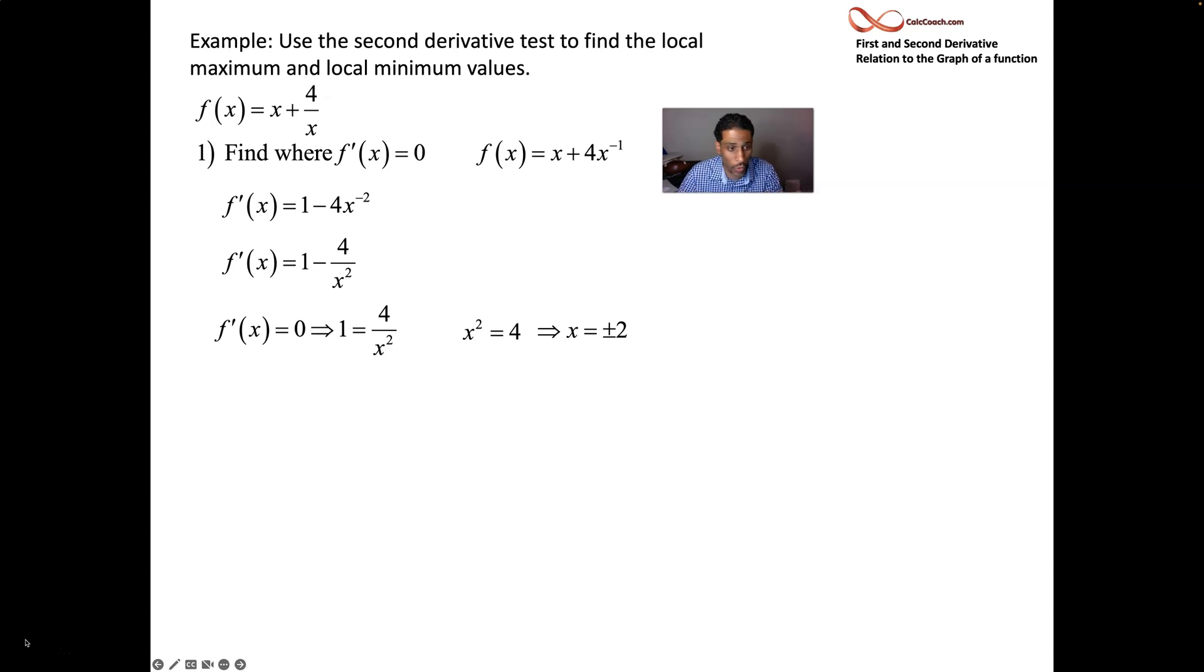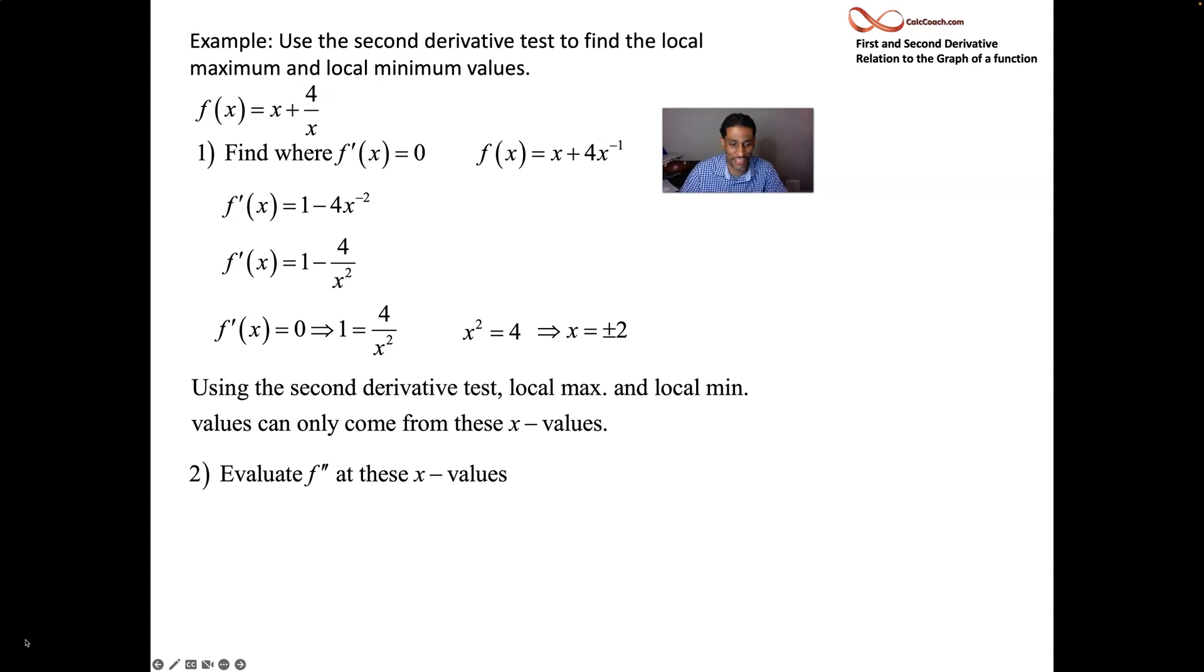The second derivative isn't too much trouble to take here. If your first derivative is 1 - 4x^(-2), then your second derivative is 8x^(-3). So let's plug these values into that: 8/x³. If you plug a 2 in, the value is 1, but we care about the sign. It's positive, concave up like a cup, local min.